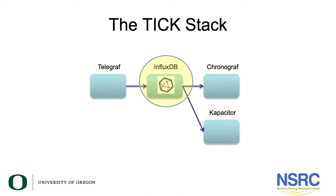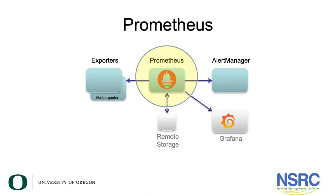The TIC stack has agents called Telegraf, which send data into a data store you can explore using tools like Capacitor and Chronograph, which provide beautiful dashboards. Prometheus, which has become quite popular, uses node exporters to push information, but can also pull data using SNMP or HTTP. Data is stored and you can alert on it using a tool called Alert Manager. Grafana is a typical dashboard used with Prometheus to create customized, detailed visualizations.